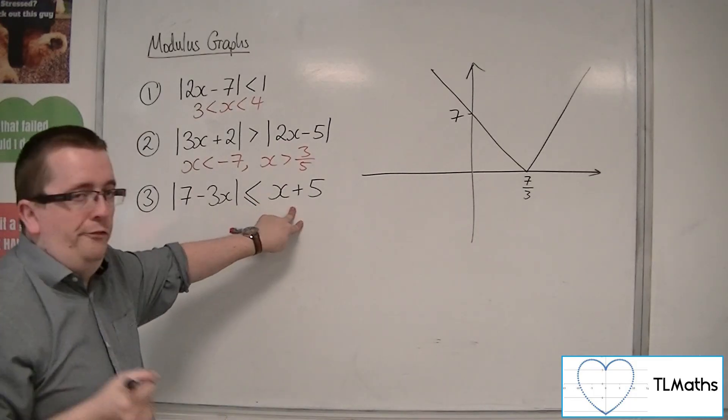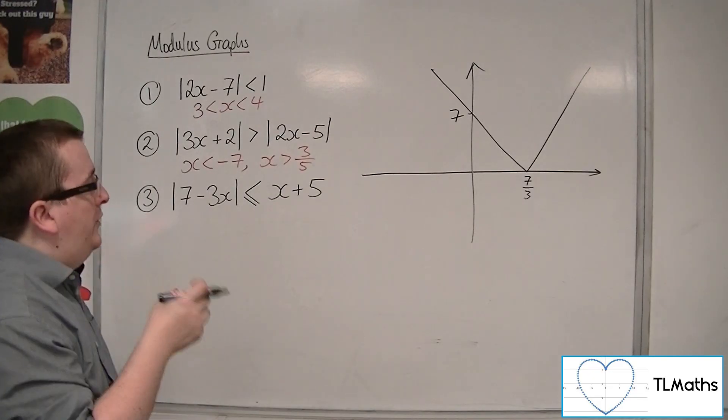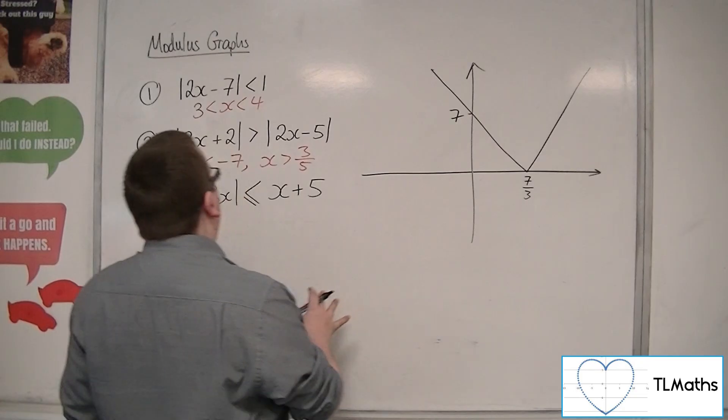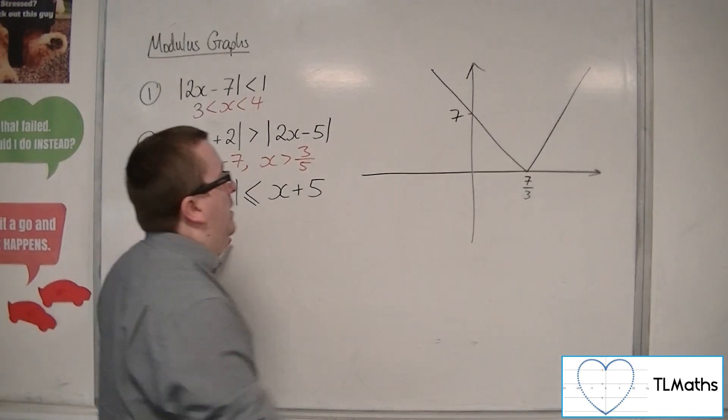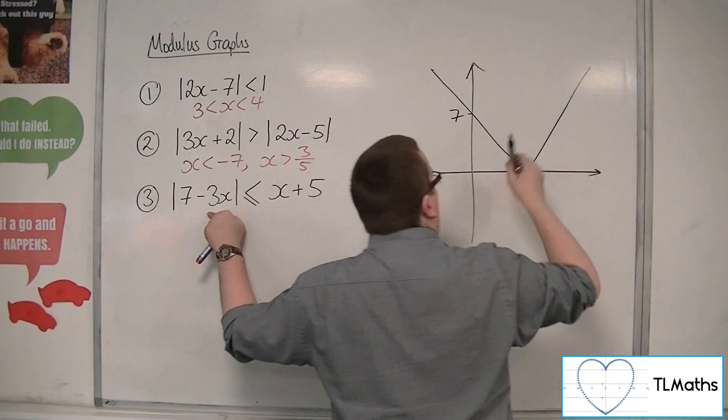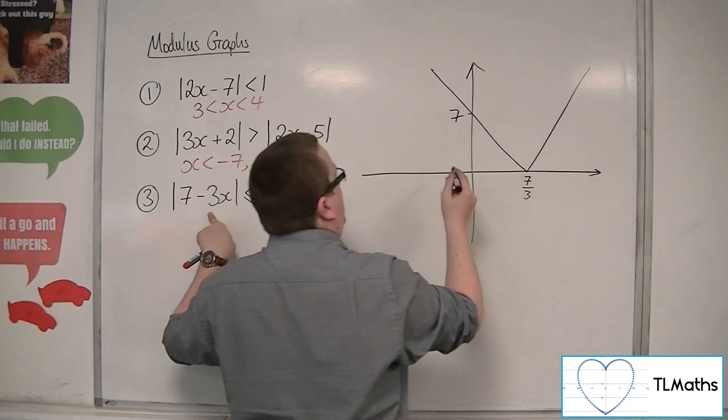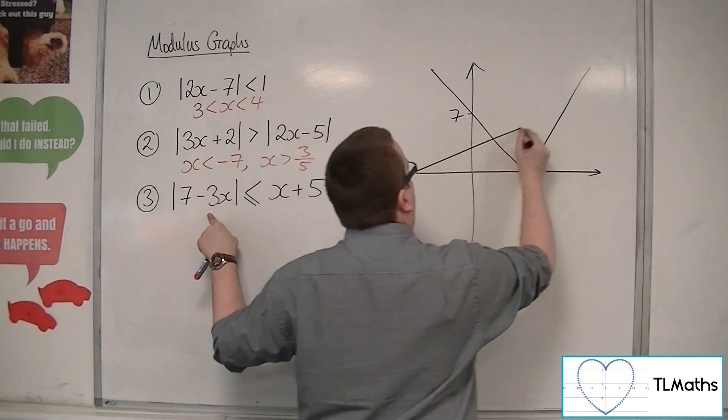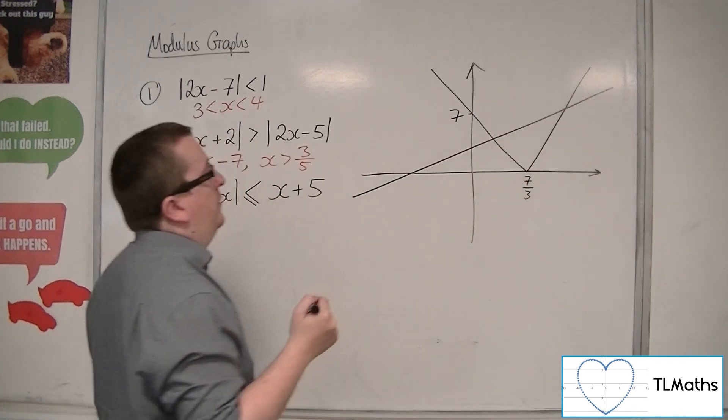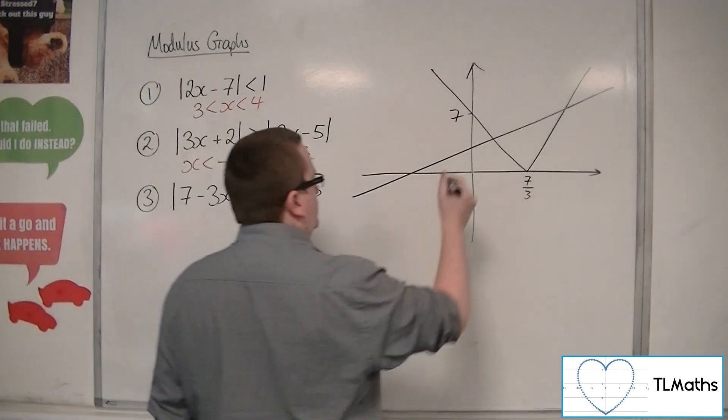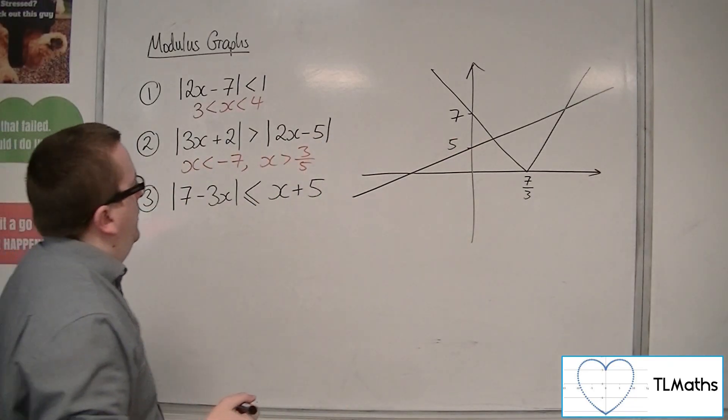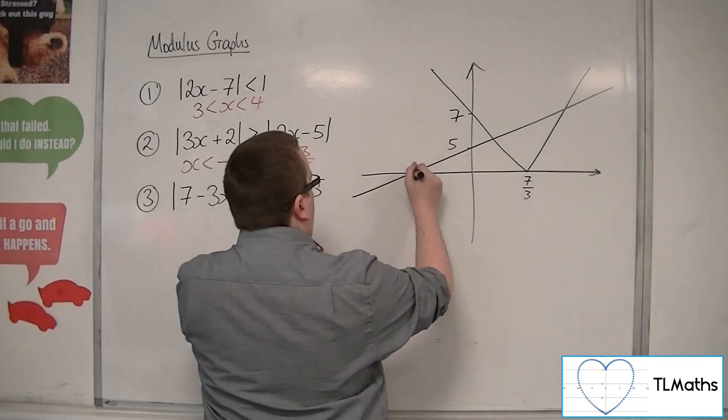Now, x plus 5 is a straight line going through 5 on the y-axis. It's got a gradient of 1, whereas this part of the graph has a gradient of 3. So, it will be shallower than that. And it needs to cross through 5. So, it's a straight line going through like so.